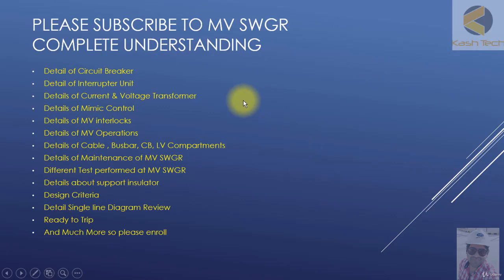After completing this, I will also be launching a detailed MV switchgear course — complete understanding — which will include a detailed review of all parts of the MV switchgear: circuit breaker interrupters, VCB, current and voltage control, interlocks, mechanical and electrical interlocks, MV operations, cable, bus bar, CB and LV compartments, maintenance, different tests, support insulators, design criteria, single line diagram review, ready-to-trip feature, and much more. Please take this training and then enroll in the detailed MV switchgear complete understanding course.